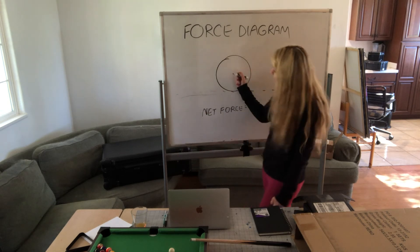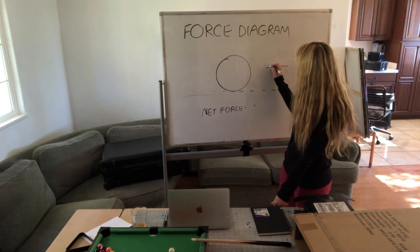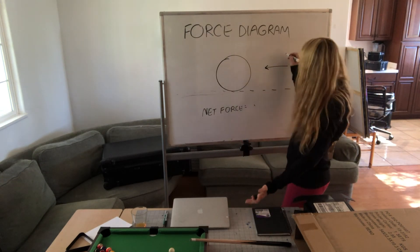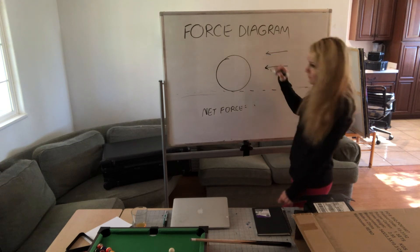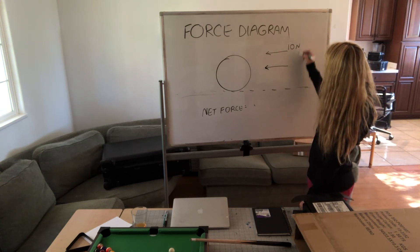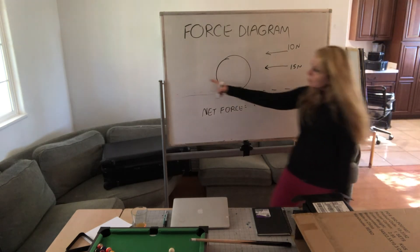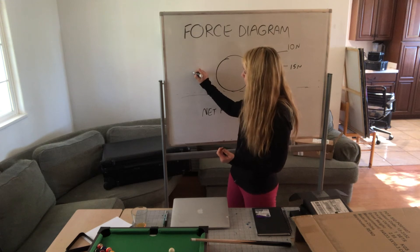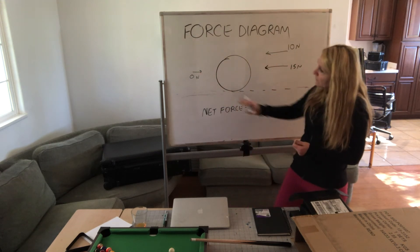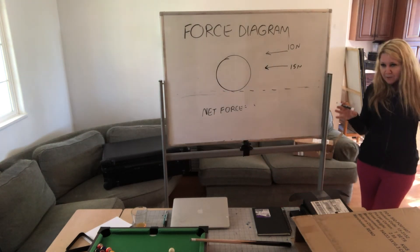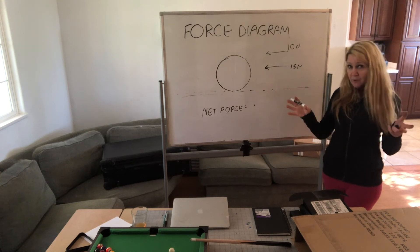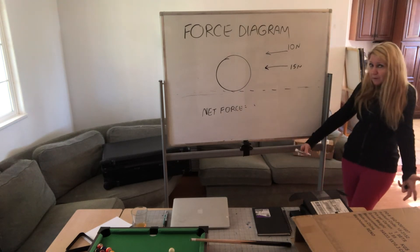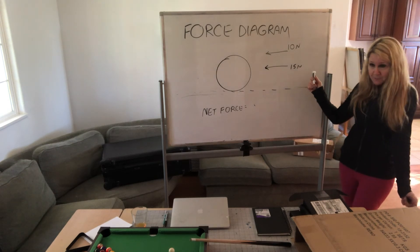In another example, two thrust forces act on the cue ball — one of 10 newtons and one of 15 newtons — going the same direction with no opposing force. When forces go the same direction, you add them: 10 plus 15 equals 25 newtons total. That's the net force on the cue ball.